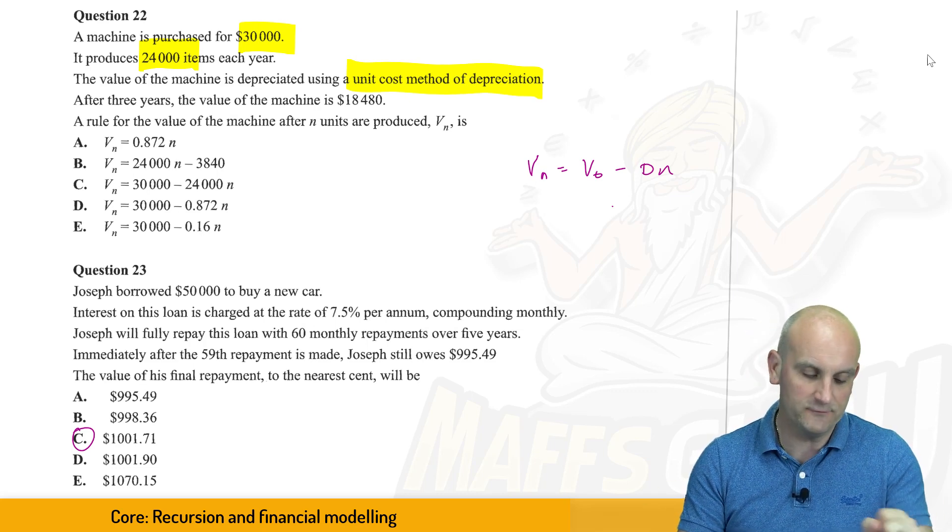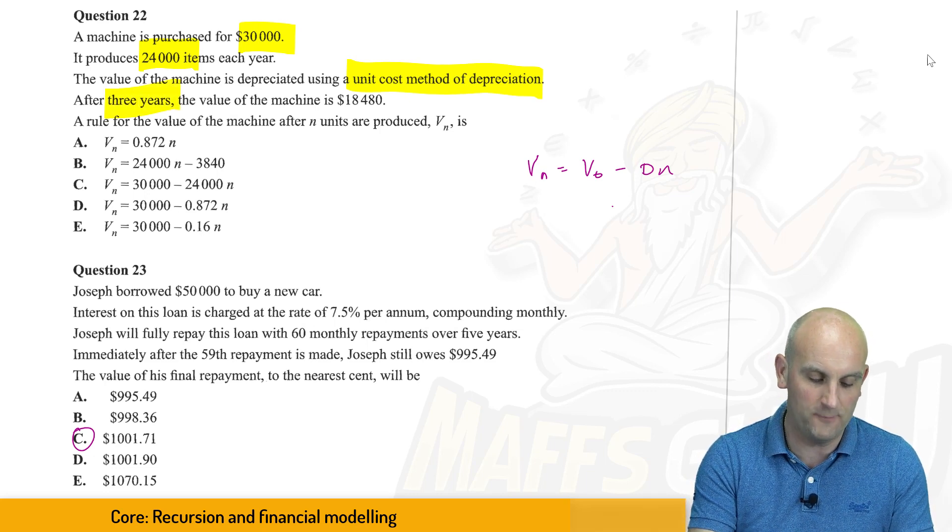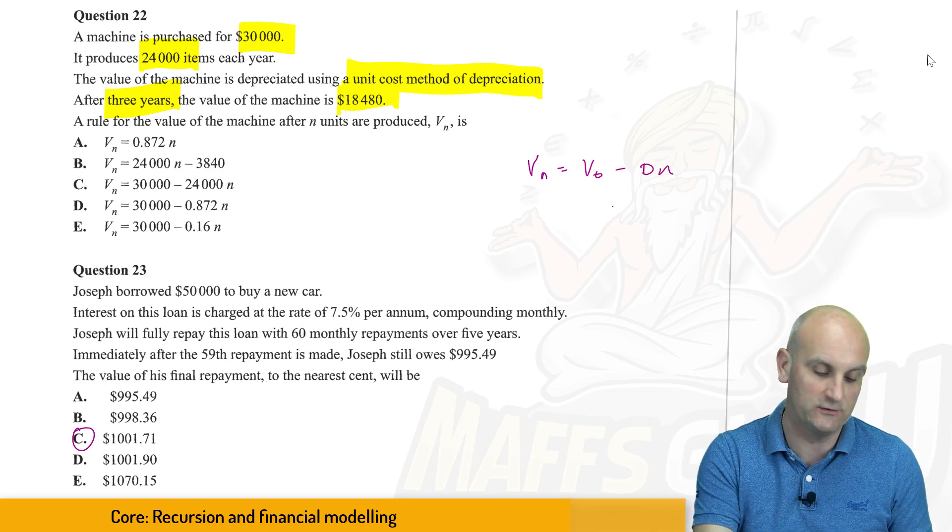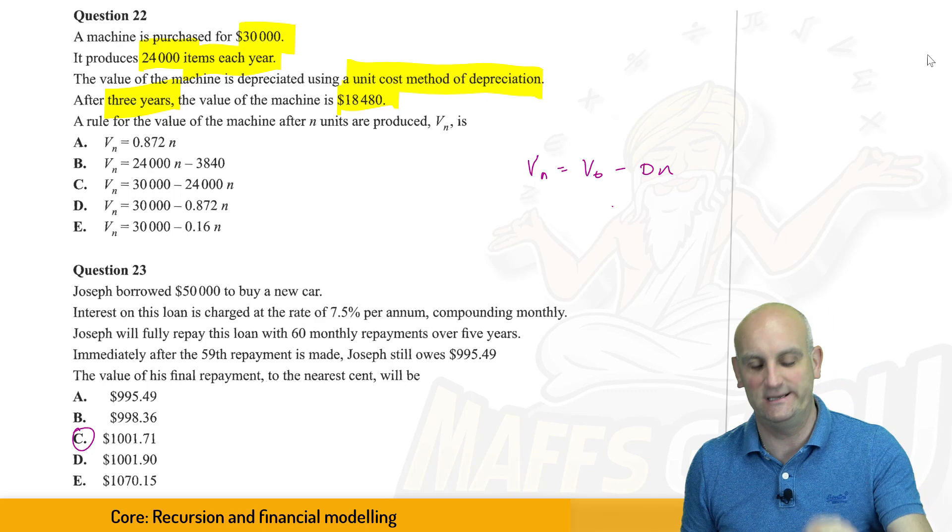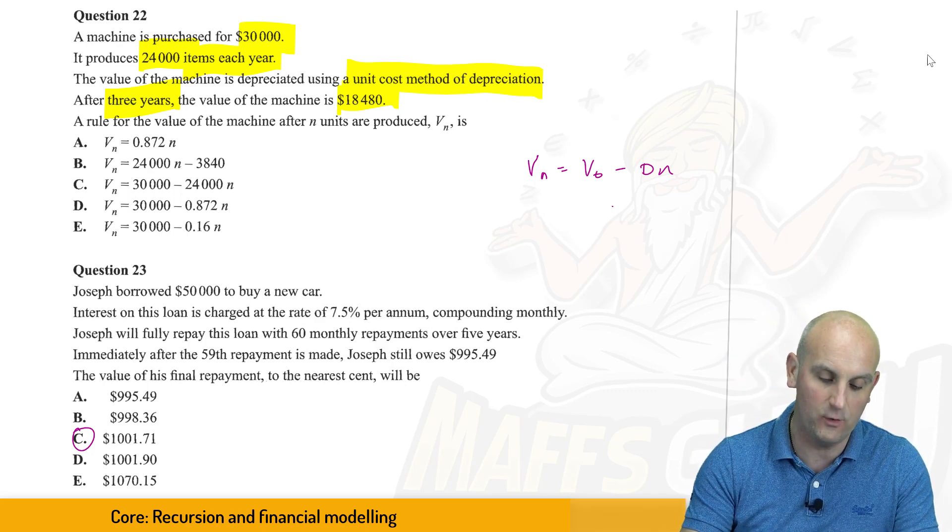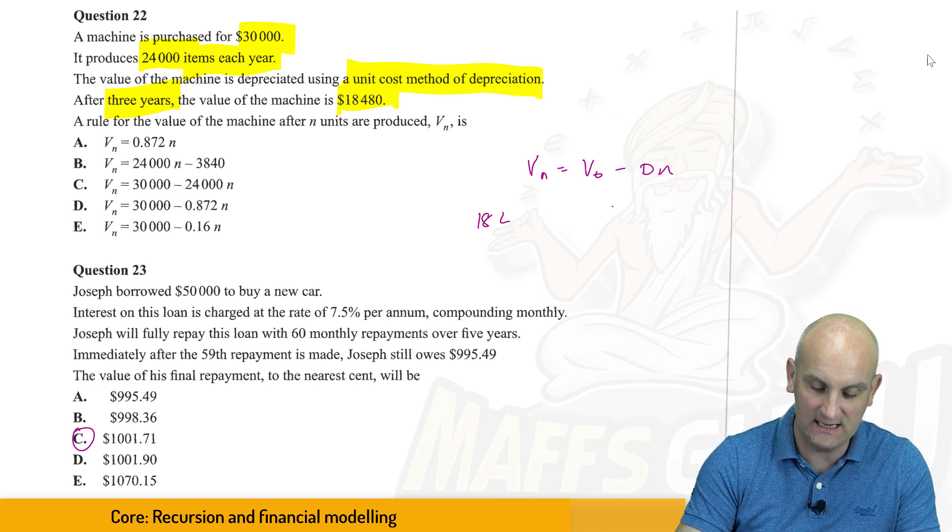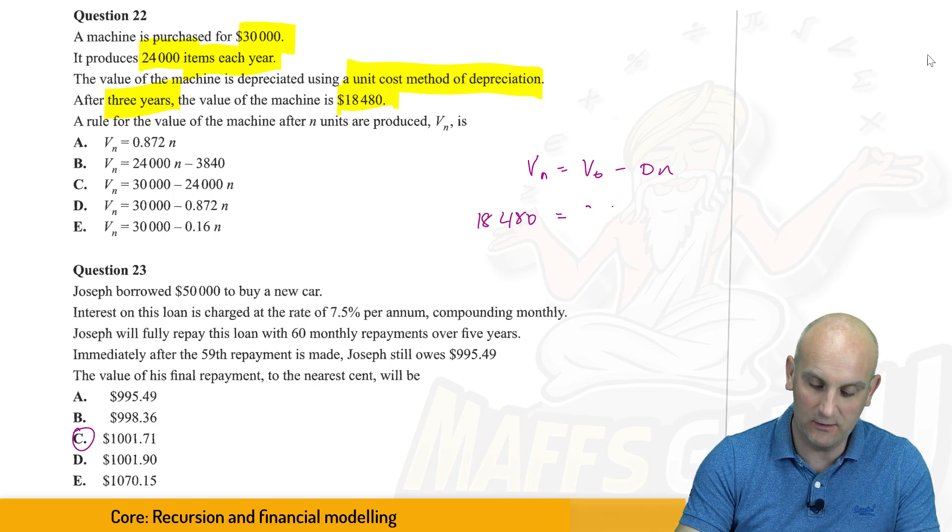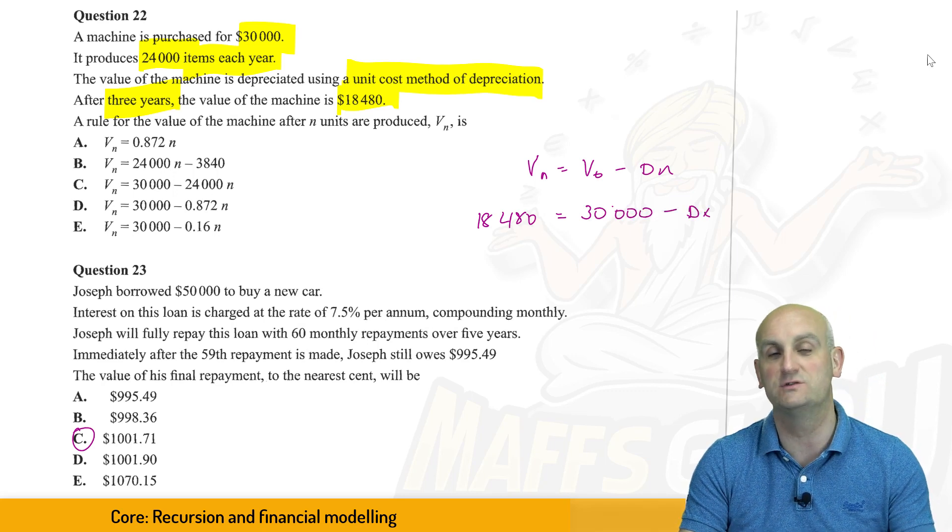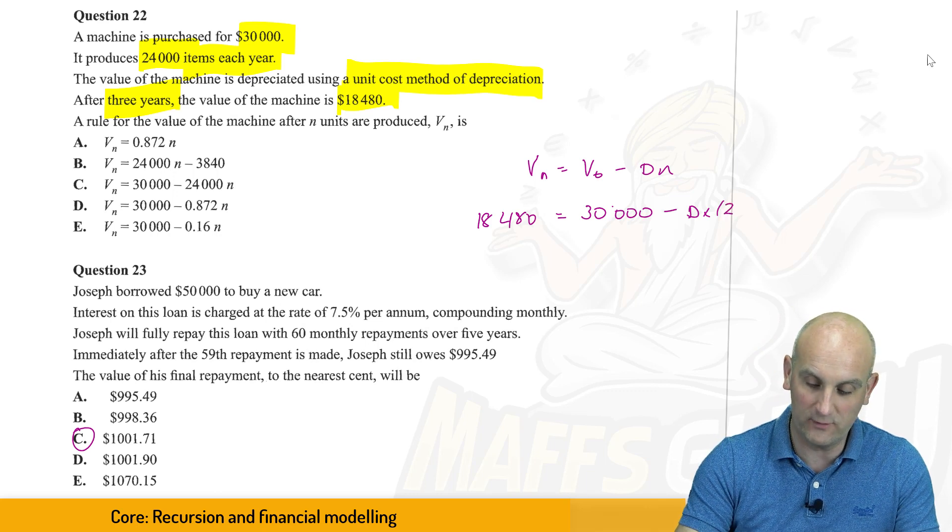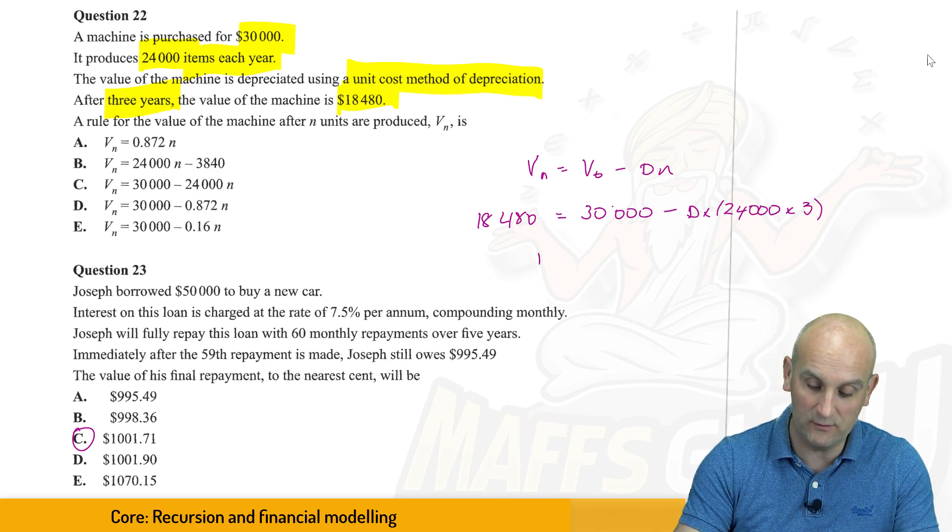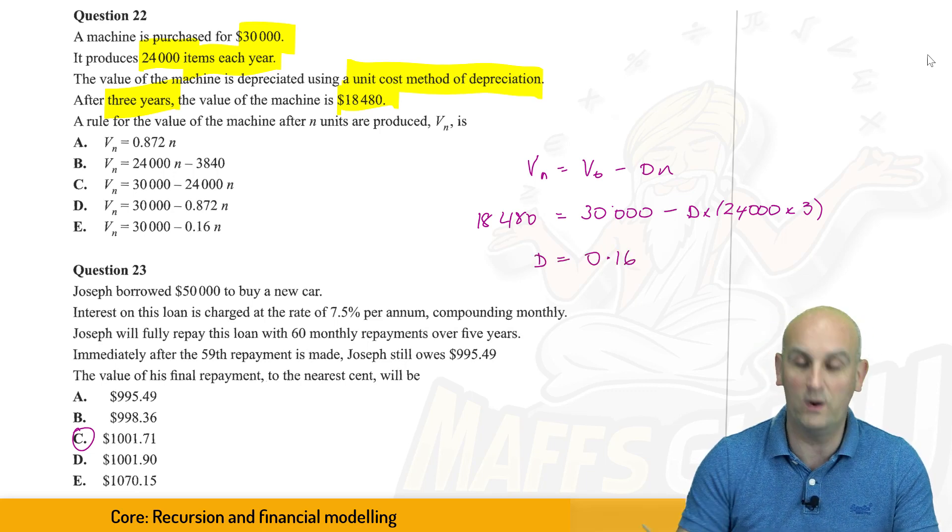The value, we've done that after three years, the value of the machine is, a bit of a trick there, the word three years, 18,480 because we said here it's 24,000 items each year. So filling in this information, we get VN. Okay, so we know that after three years, it was 18,480 is equal to V0, which was 30,000 minus D multiplied by N, which was my number of units, which is 24,000 times by three. And when I work that out, I get my value of D is equal to 0.16.